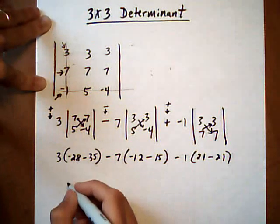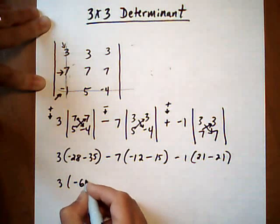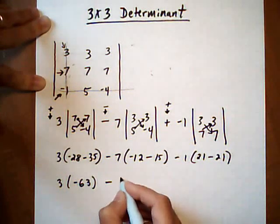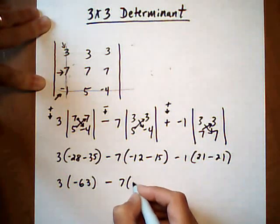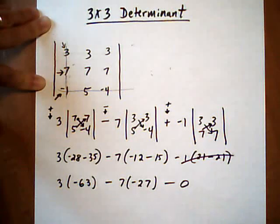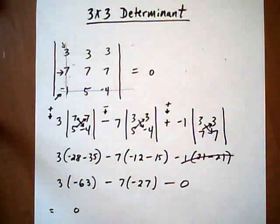Okay, and that's going to give us 3 times negative 63, take away 7 times negative 27, take away, well, 21 minus 21 is 0, so 0. And once you evaluate that out, this whole thing comes out to be a 0. So this 3 by 3 determinant equals 0.